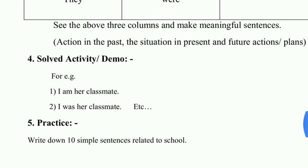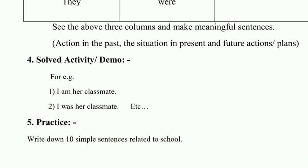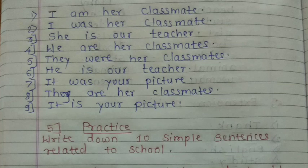Now let us see the answers from the table. I am her classmate. I was her classmate. She is our teacher. We are her classmates. They were her classmates. He is our teacher. It was your picture. They are her classmates. It is your picture.